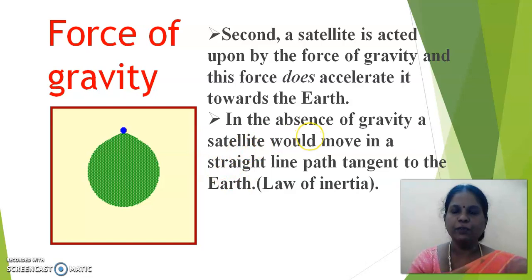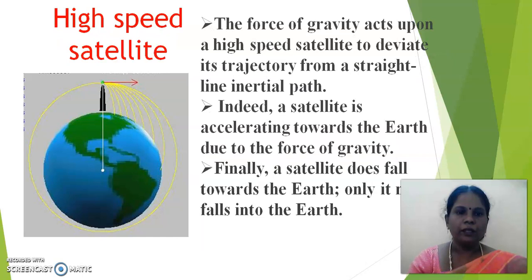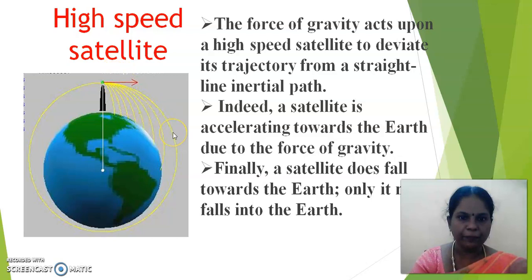Second, a satellite is acted upon by the force of gravity, and this force does accelerate it towards the earth. In the absence of gravity, a satellite would move in a straight-line path tangent to the earth, as per the law of inertia. Since there is a force of gravity, it acts upon a high-speed satellite to deviate its trajectory from a straight-line inertial path. Indeed, a satellite is accelerating towards the earth due to the force of gravity.